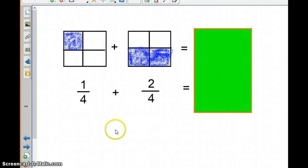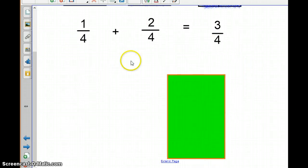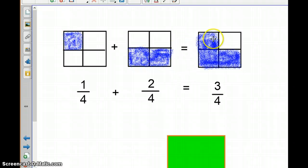So we can kind of picture what's going to happen here. We have the 1 fourth, we have the 2 fourths, so we just go ahead and add the numerators. 1 plus 2 is 3. So our image would look like this. We added our 1 fourth to our 2 fourths, and we see that 3 fourths of the fraction is shaded. So that is our answer.